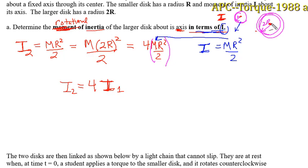You can also quickly use logic to say the rotational inertia varies as r squared. So if I double r, I'm going to increase my i by a factor of 4.